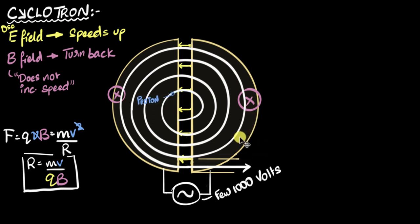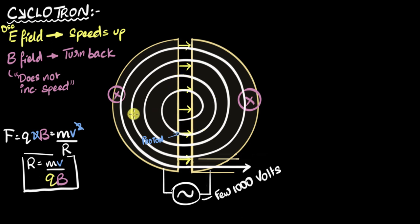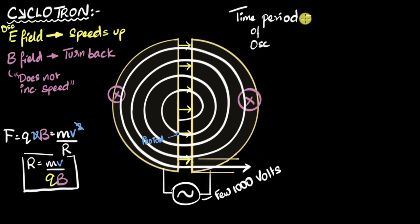As a result, the proton speeds up and then it keeps turning due to the magnetic field, and now when it's about to re-enter, this time I'm going to flip my electric field back, and I've finished one oscillation. So the time it takes for my proton to finish one spiral — this is one spiral, then this is the second spiral — the time it takes to finish one spiral is exactly the time it takes for my electric field to finish one oscillation. So the time period of the oscillator should equal the time for one spiral.